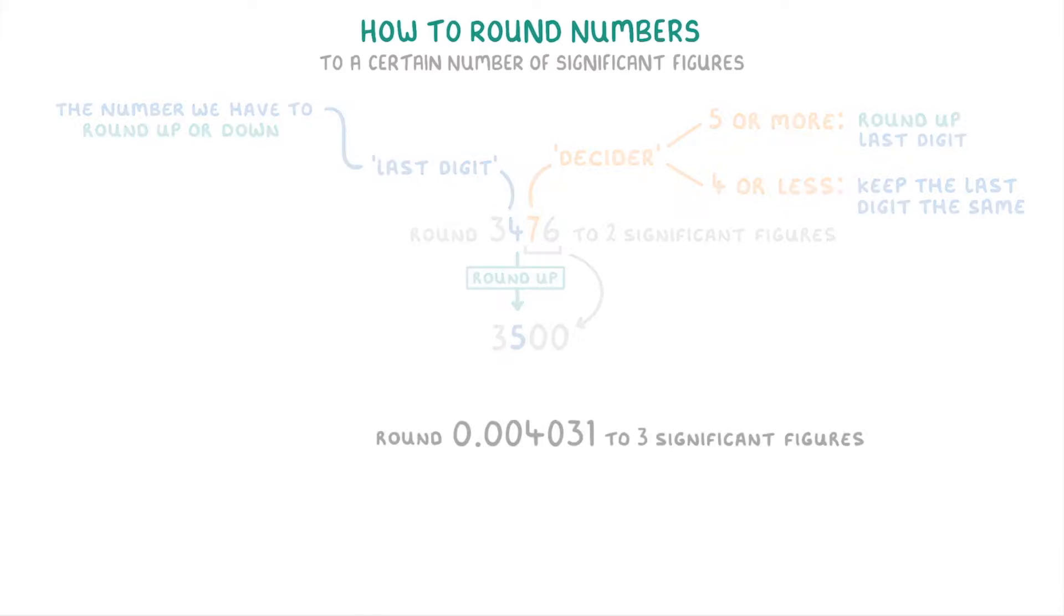For this next one, we need to round 0.004031 to three significant figures. So this time the first thing we do is find the third significant figure, which is this three. And we can label this our last digit.